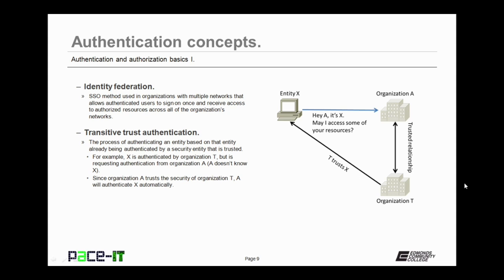In some cases, identity federation may rely upon transitive trust authentication. This is the process of authenticating an entity based on that entity already being authenticated by a security entity that is trusted. For example, X is authenticated by organization T but is requesting authentication from organization A. A doesn't know X. Since organization A trusts the security of organization T, A will authenticate X automatically. That is transitive trust authentication.